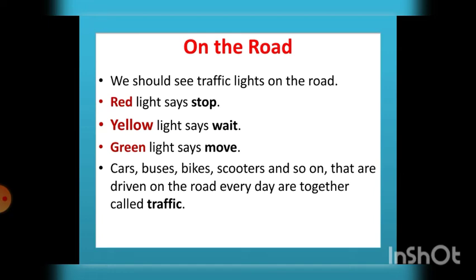Next we are going to see road safety rules. First, we should obey traffic lights on the road. The traffic light has three colors — red, yellow, and green. Red light means stop, yellow light means wait, and green light means move. Traffic refers to all the vehicles like cars, buses, bikes, and scooters that are driven on the road together. T-R-A-F-F-I-C.